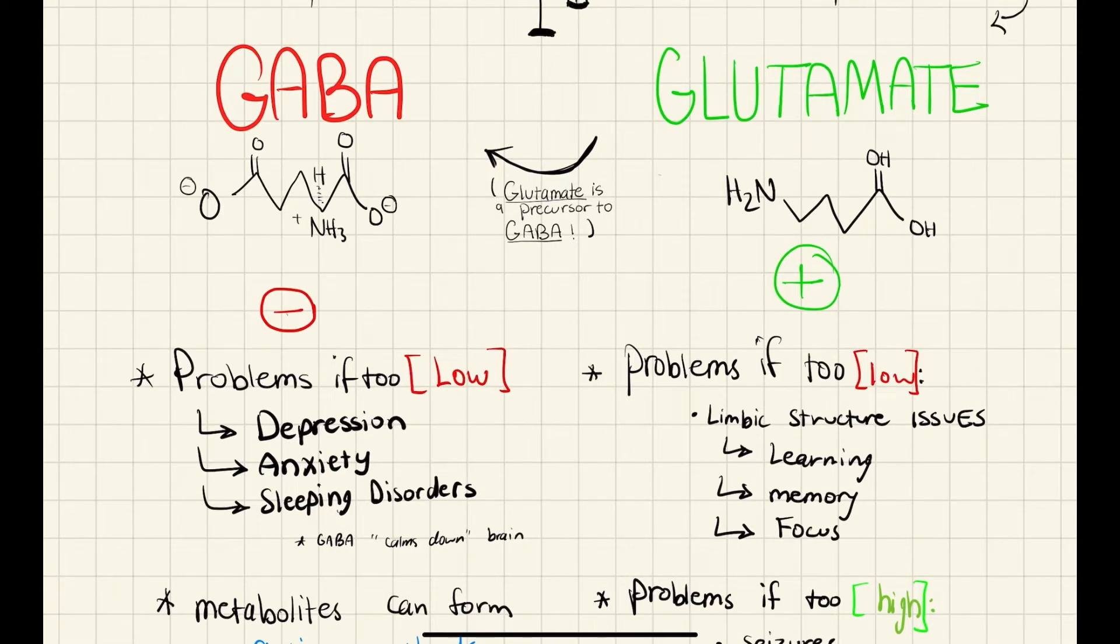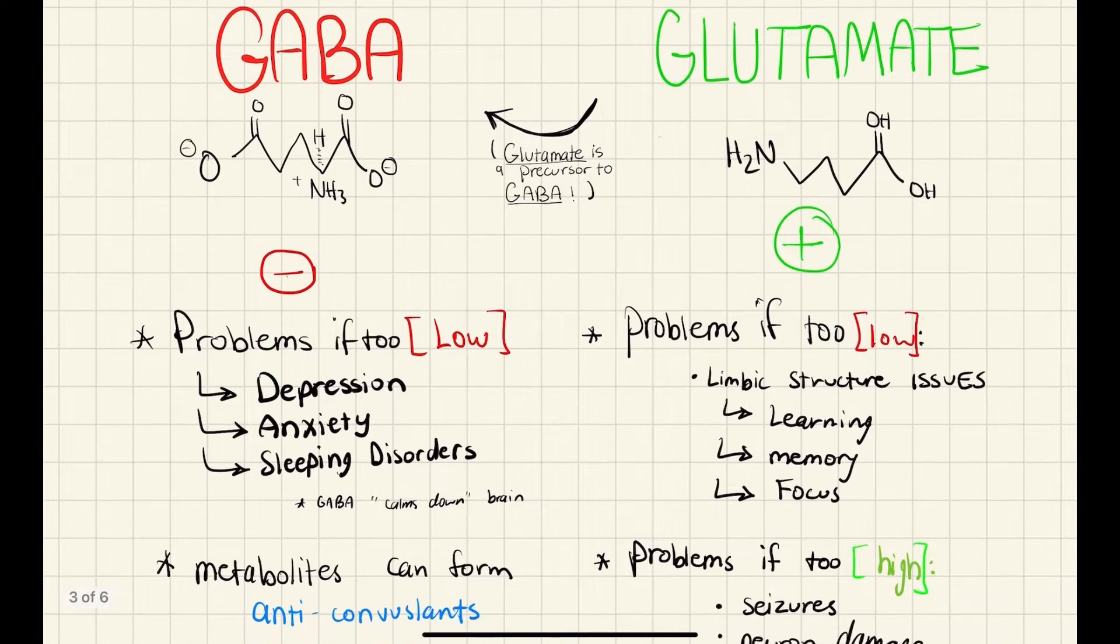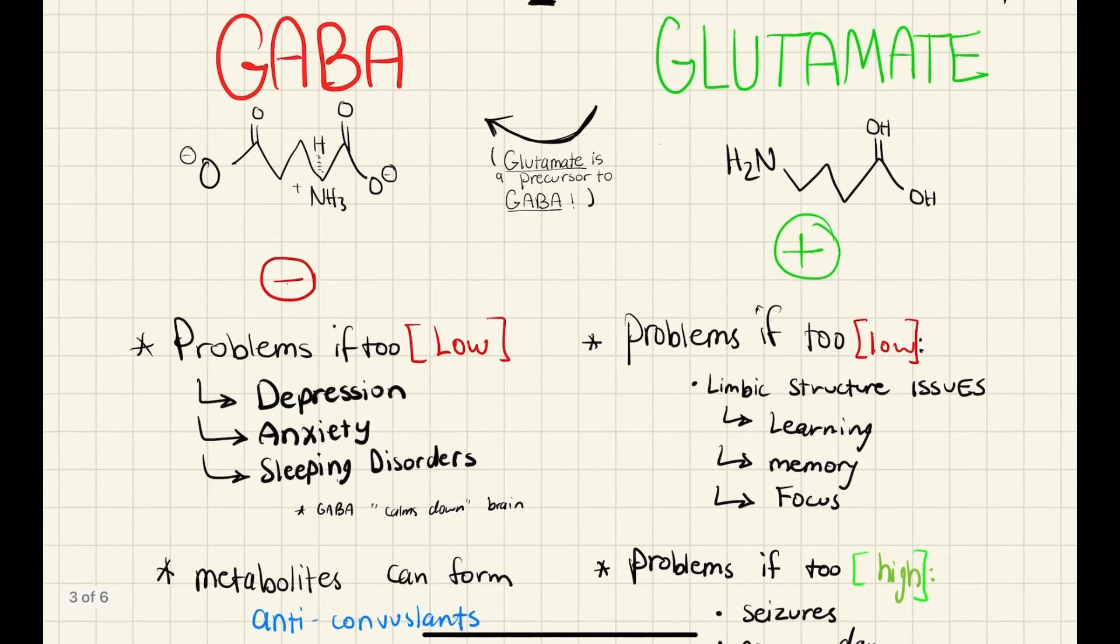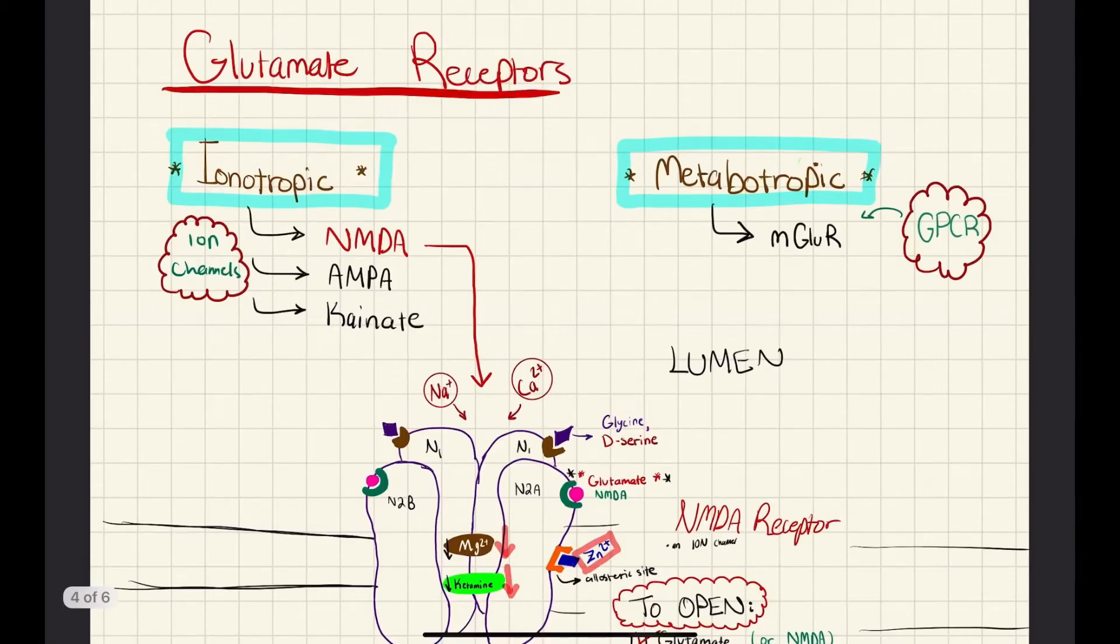And this is essentially because GABA, in a sense, calms down the brain. So if you're missing that GABA, your brain will be overactive during some processes. An interesting fact, though, is that the metabolites can actually form anticonvulsants for GABA.